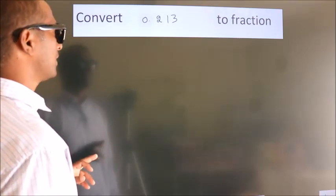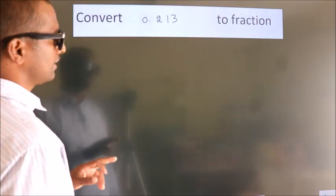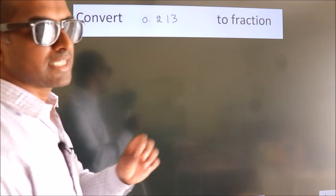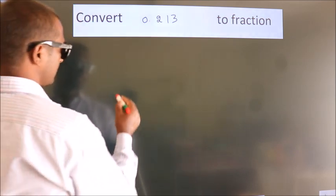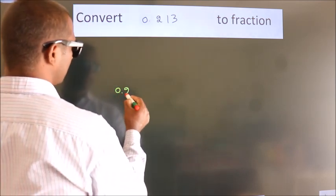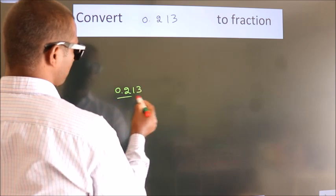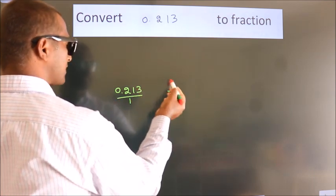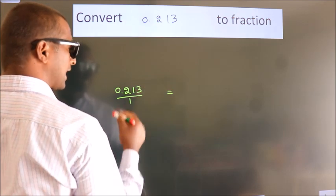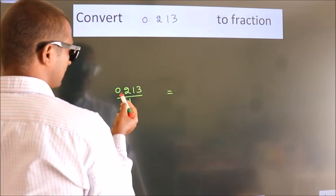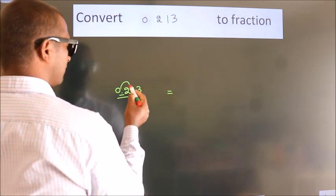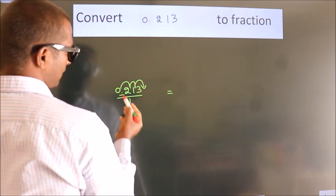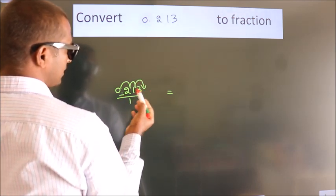Convert 0.213 to a fraction. Given is 0.213. To convert this to a fraction, we have to move this decimal after 1, 2, 3 numbers — so we need to move the decimal after 3 numbers.